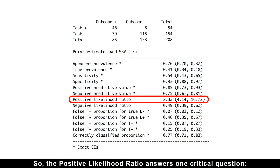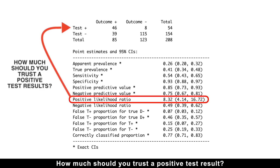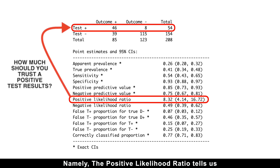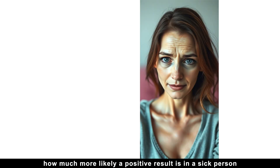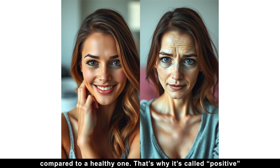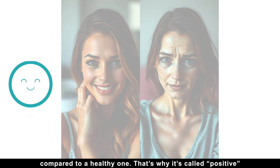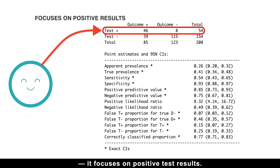So the positive likelihood ratio answers one critical question: how much should you trust a positive test result? The positive likelihood ratio tells us how much more likely a positive result is in a sick person compared to a healthy one. That's why it's called positive — it focuses on positive test results.